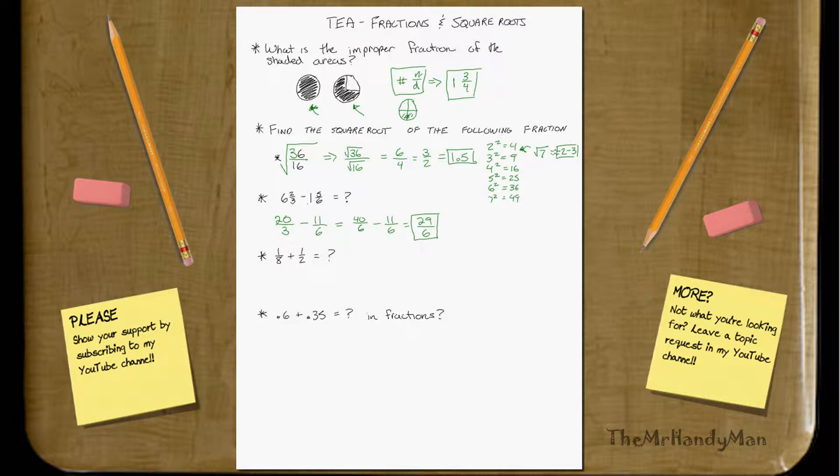Let's do one more over here. 1 eighth plus 1 half. Well, just simple. Get the same common denominator. Multiply the top and bottom by 4. Because that's all you think about. You say, what do I have to multiply 2 to get it to that common denominator? In this case, it's 8. So, 2, you would multiply it by 4. So, you multiply top and bottom by 4. So, it's 4 over 8 equals 5 over 8. 5 eighths.